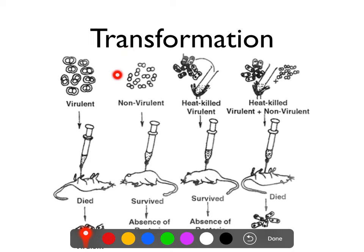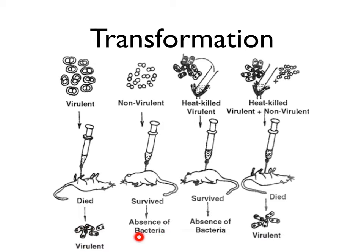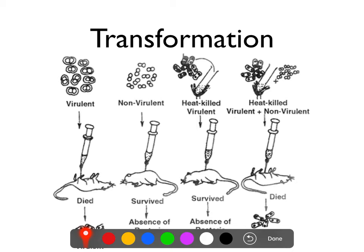Then there's the rough strain. If you inject that into mice, the mice get the sniffles a little bit, but ultimately they typically survive. And if you culture their blood, you don't find any bacteria because their immune system fought off the bacteria. We know that the difference between smooth and rough is the presence of a capsule, but they didn't know this at the time.